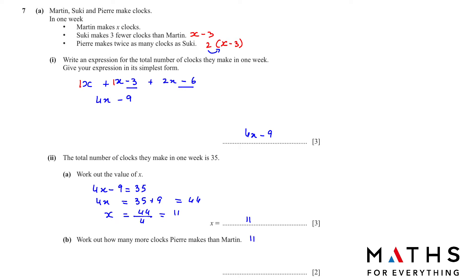We have to work out how many more clocks Pierre makes than Martin. Martin makes 11. Pierre makes 2 times X minus 3 which is 11 minus 3, which gives us 16. Therefore 16 minus 11 which is 5. That is the number of clocks Pierre makes more than Martin.